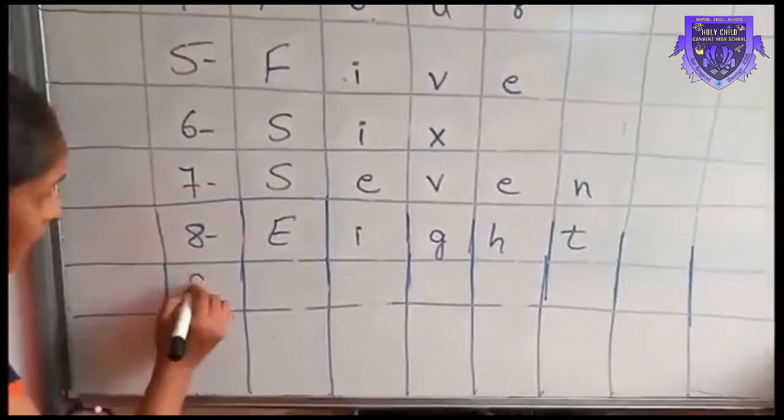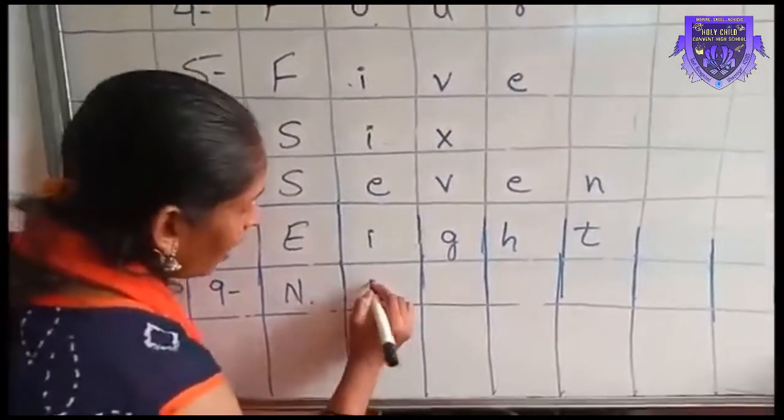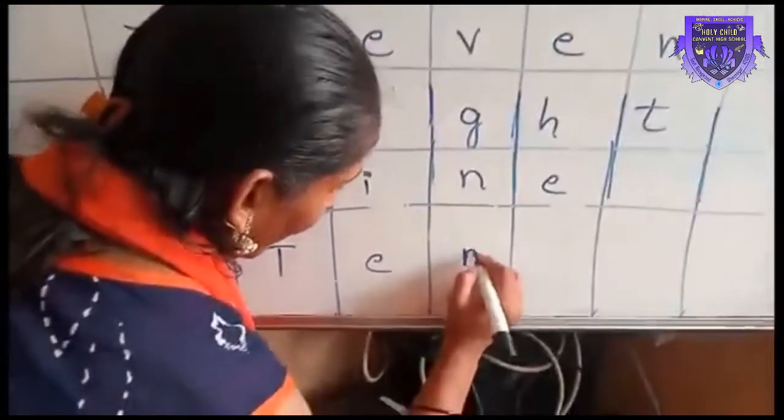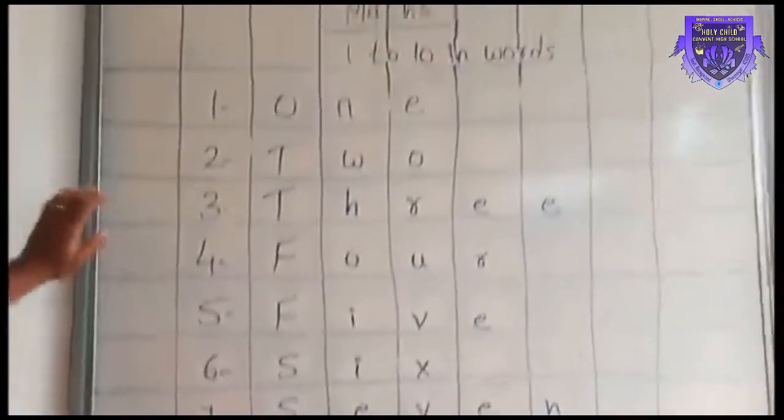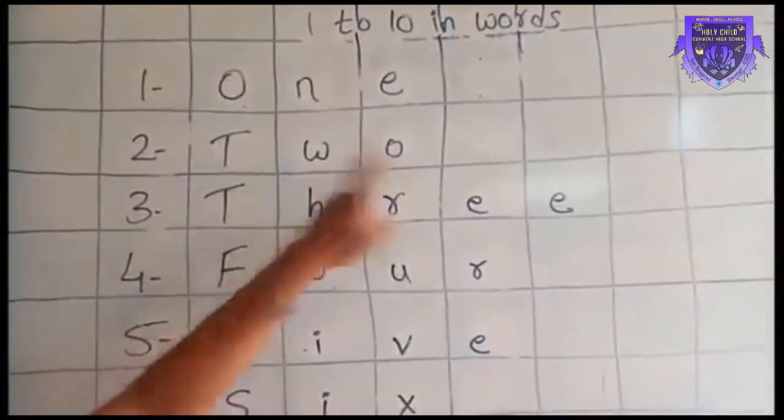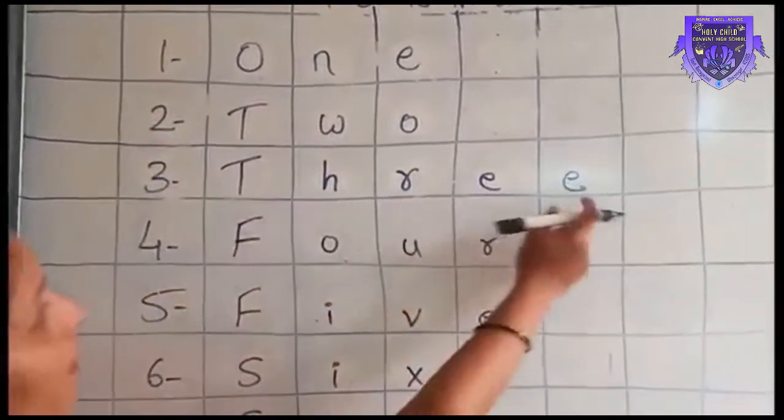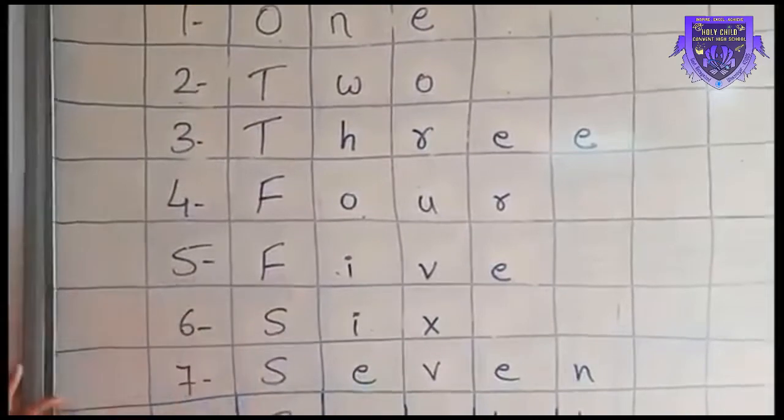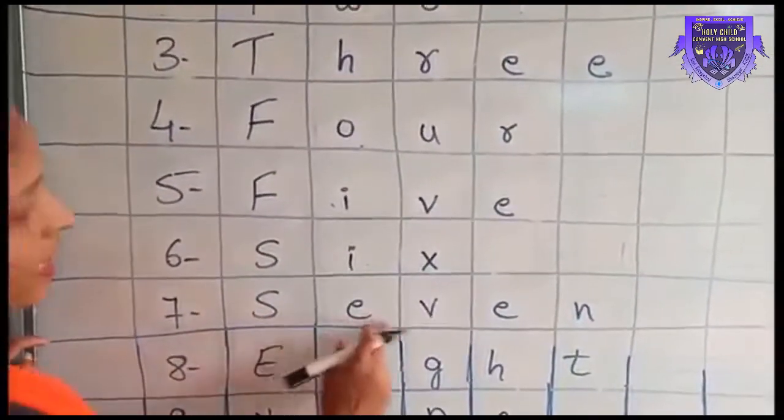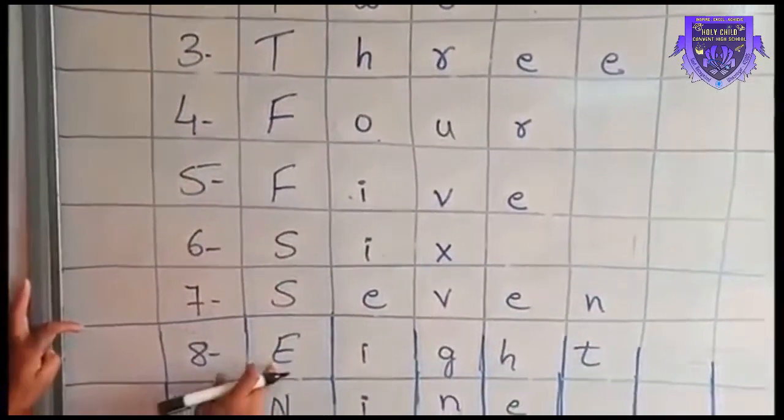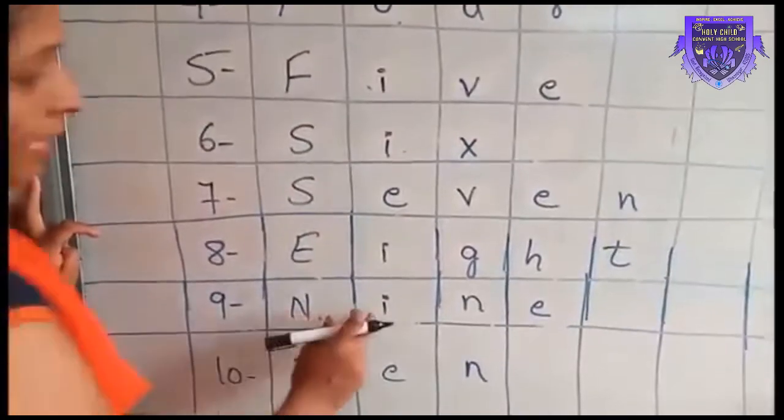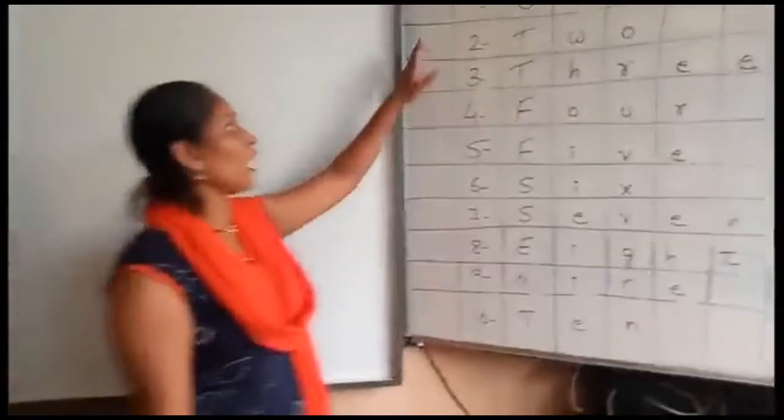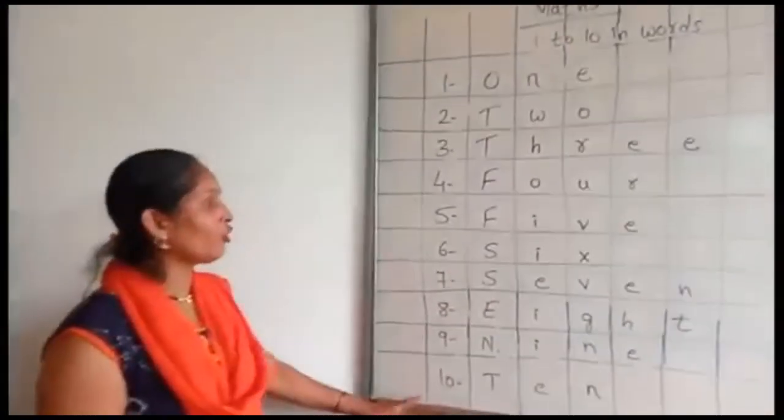Number 9: N-I-N-E, nine. Then number 10: T-E-N, ten. So I am repeating once again: one, two, three, four, five, six, seven, eight, nine, ten. So I hope you all understood how to write 1 to 10 in words. The same has to be written in your notebook for 2 times. Thank you.